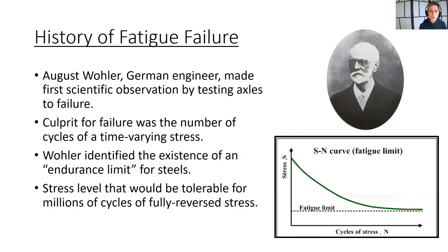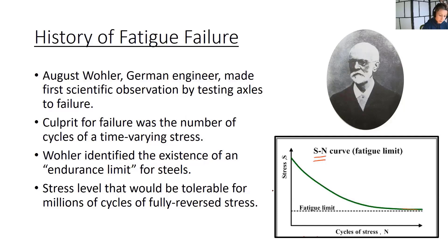A German engineer named August Wöhler began testing axles to failure in a systematic way and discovered an interesting relationship between the number of loading cycles and actual strength. Simply put, the strength of the axles diminished as a function of the number of loading cycles — depicted in what we call the SN curve. Fatigue strength is a function of the number of cycles: as cycles go up, the material's strength essentially goes down.